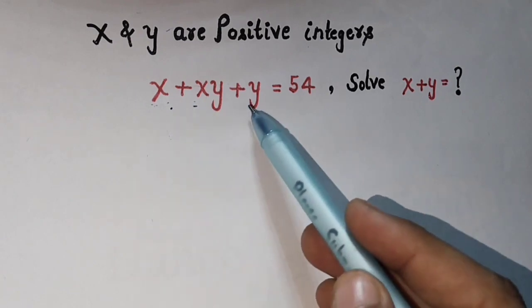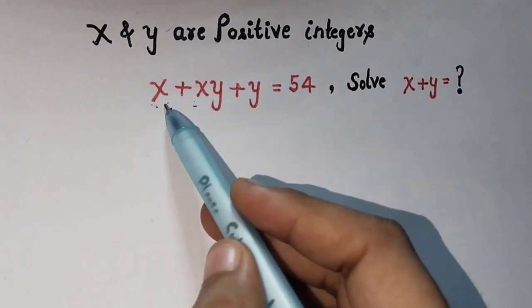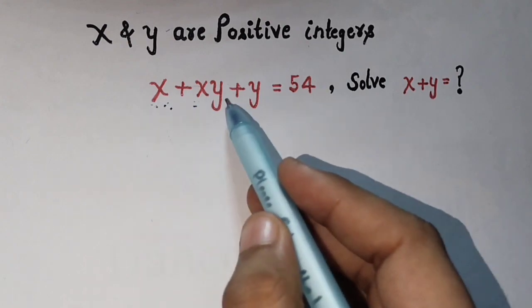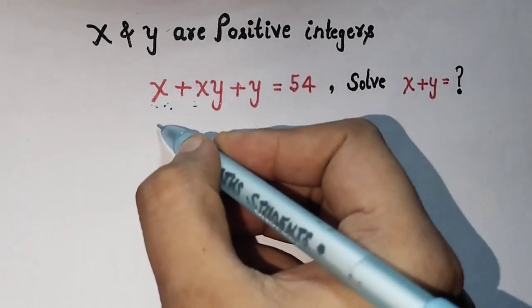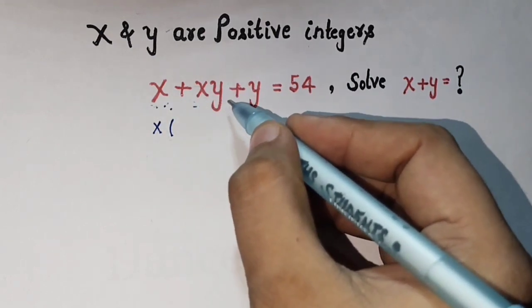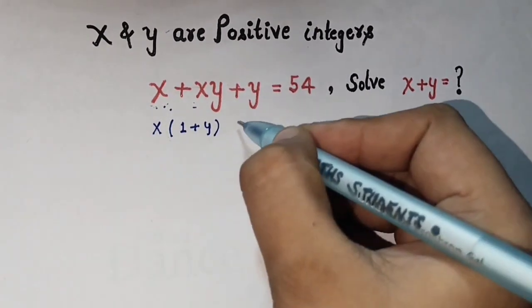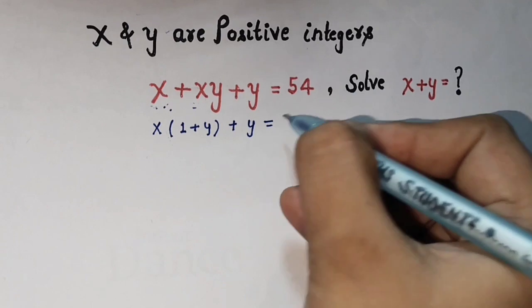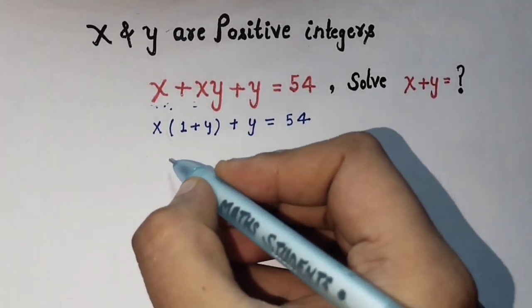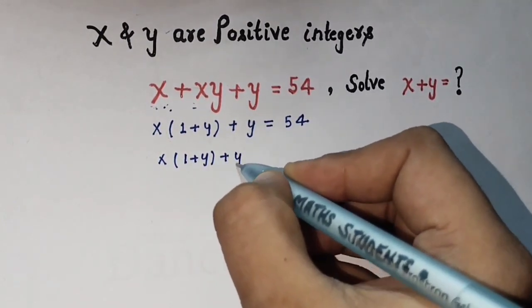What we do first is try to factor the left-hand side. You can see in the term x plus xy, we have x in common, and in the term y we have... taking x as a common factor, x divided from each term, we are left with x times (1 plus y) plus y equal to 54.